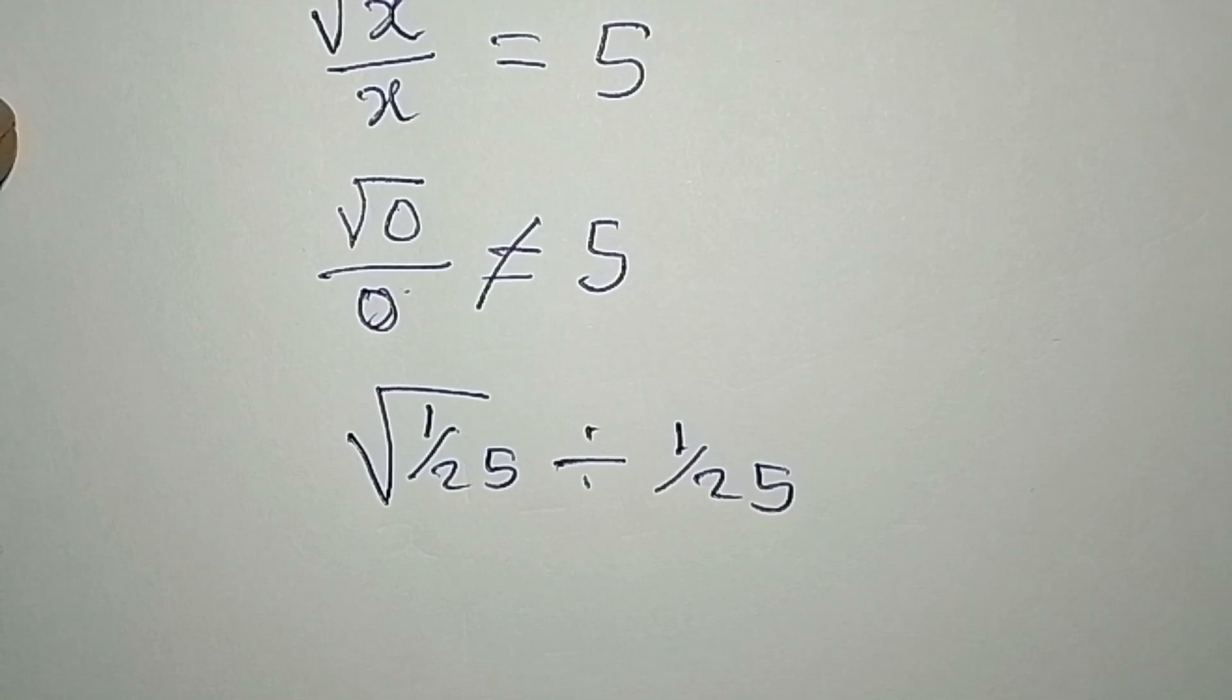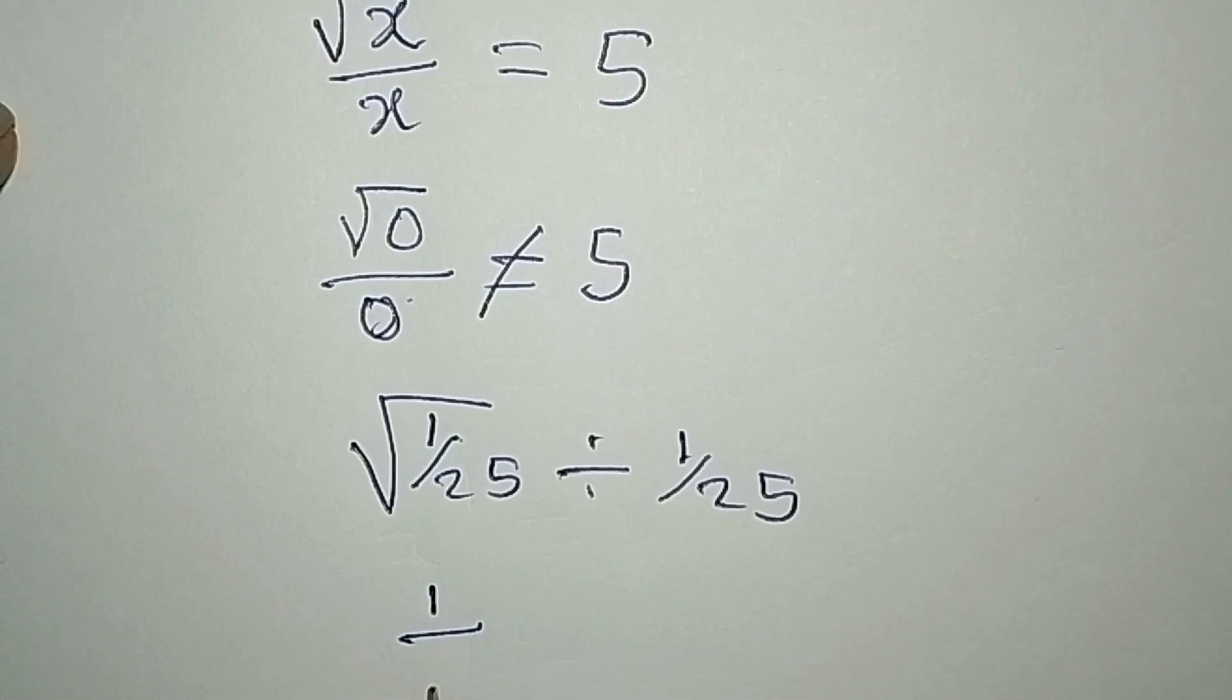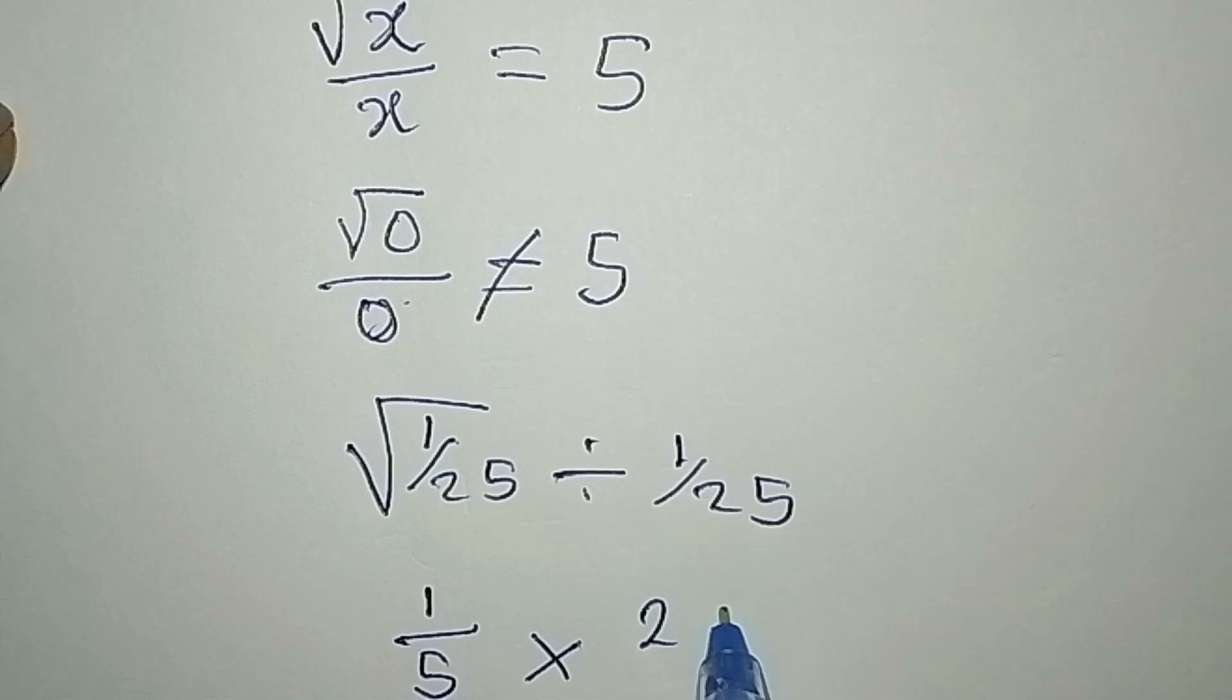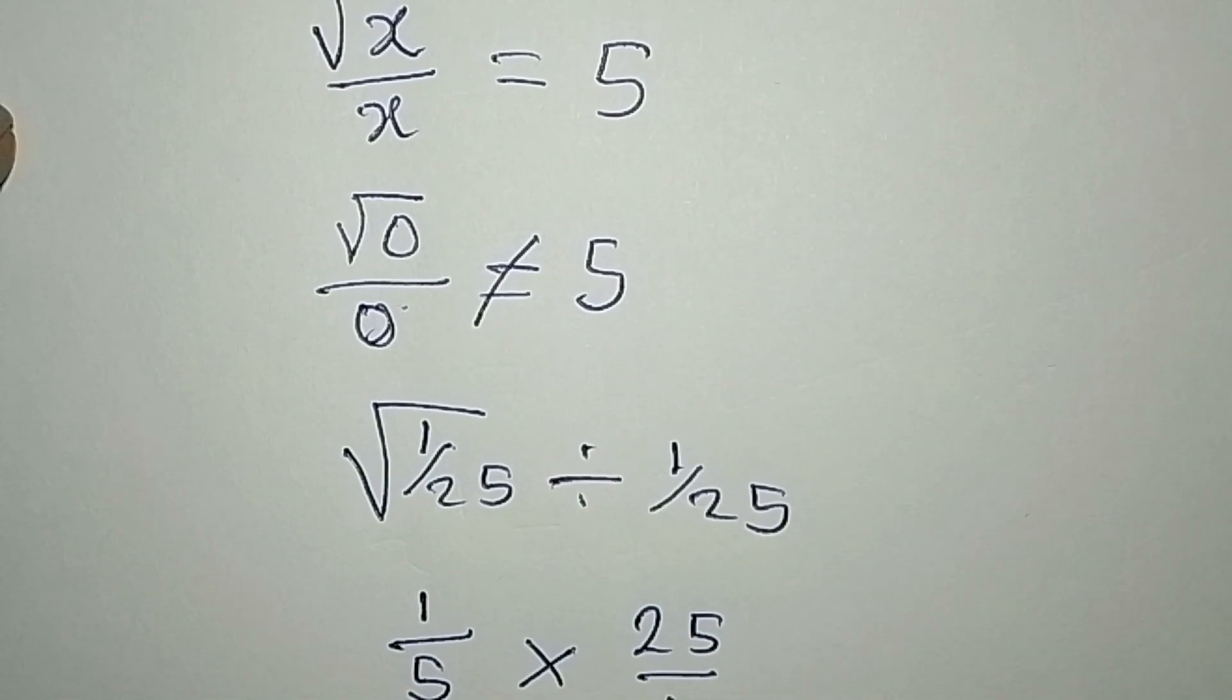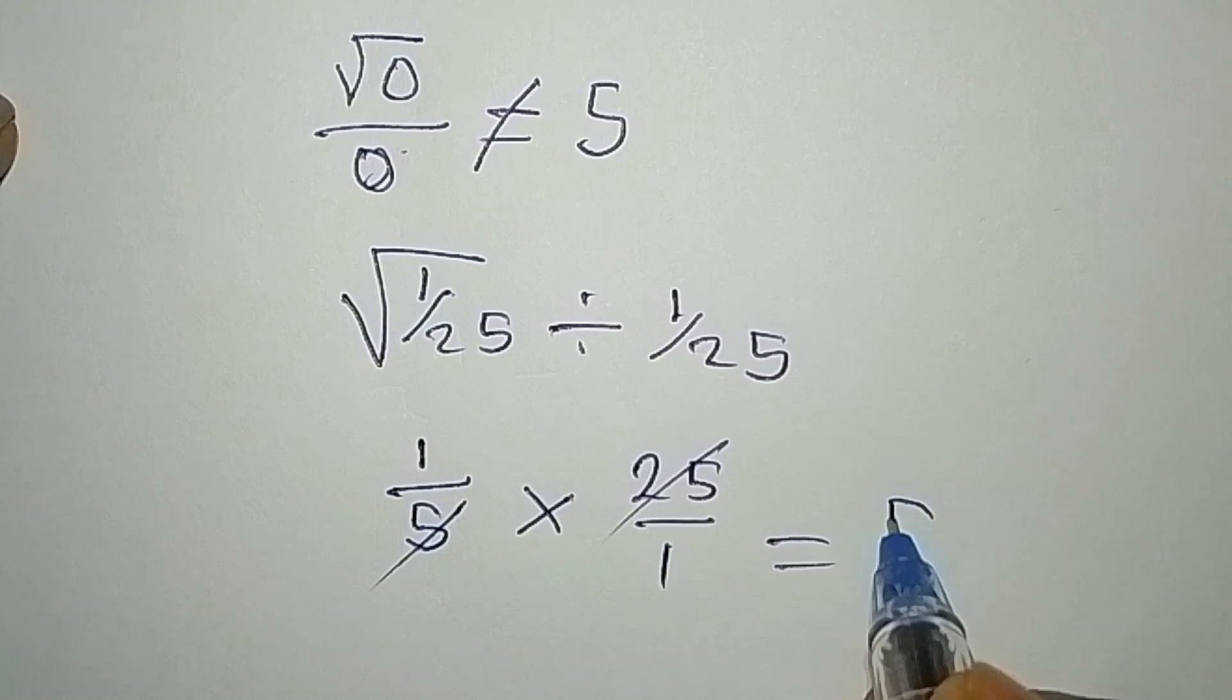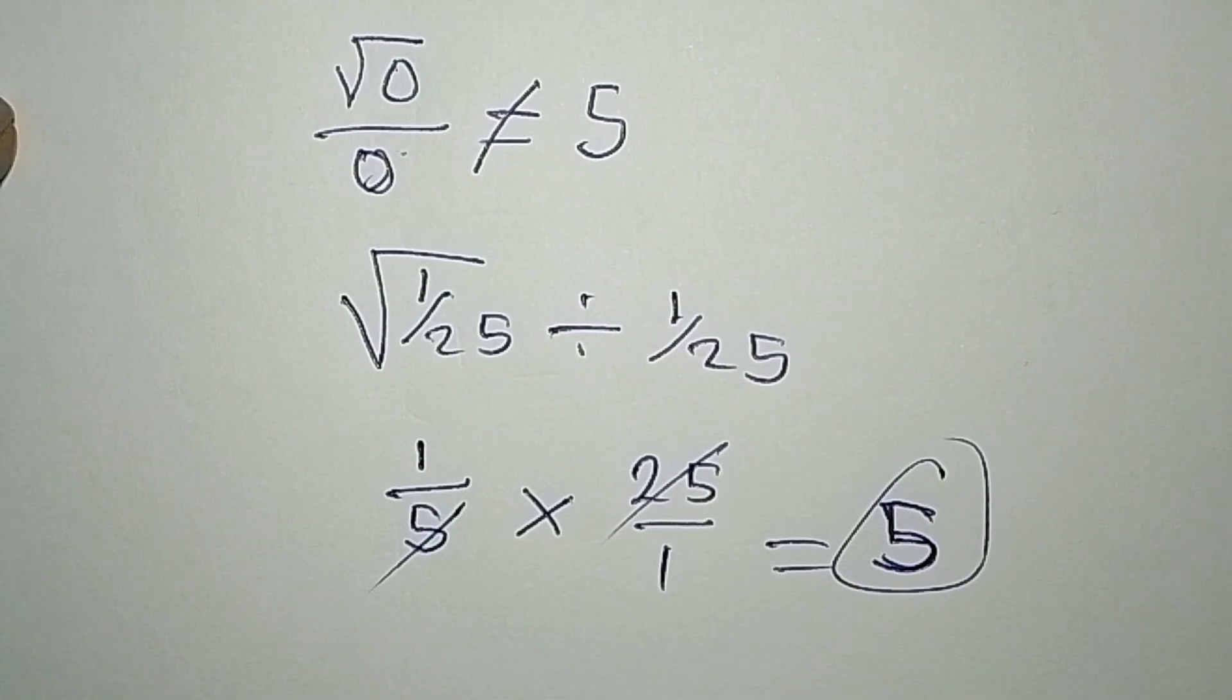Now from here, the square root of 1 is 1, square root of 25 is 5. Turn this to multiplication and we have 25. 5 goes into that and they give us 5 over 1, which is the same as 5, and this is the same 5 we had on the right hand side of the equation.